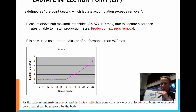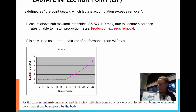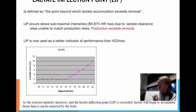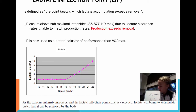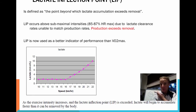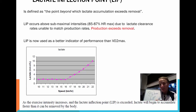In the past, VO2 max was used as the primary predictor of performance — the higher the VO2 max, the better the performance, particularly with endurance events. VO2 max represents the maximum amount of oxygen we can take in, transport, and utilize. Now, if we know where an athlete's LIP occurs — the point at which accumulation exceeds removal — that also gives us an indication of how intensely they can perform before fatigue begins to set in.